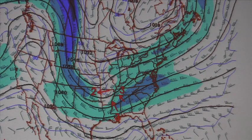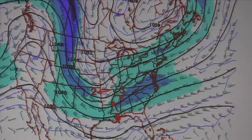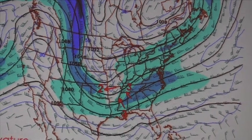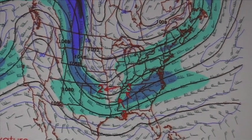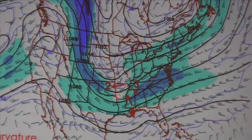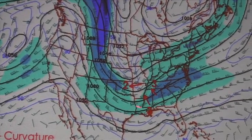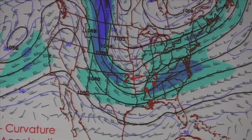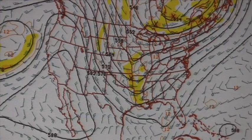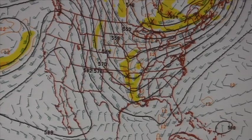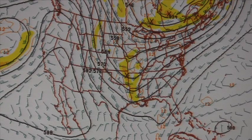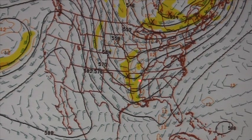On the 12-hour forecast at the 250 millibar level, over Birmingham we have slight term three acceleration just to the north, which will be pulling some mass away and creating some lifting. There is also some term two off to the west and more predominant term three off to the west as well. On the 12-hour 500 millibar forecast, there is a vort max developing in the Arkansas-Louisiana area.